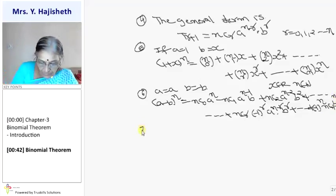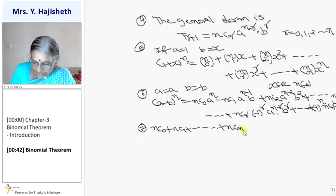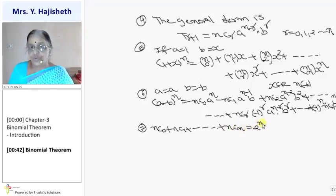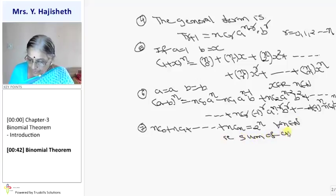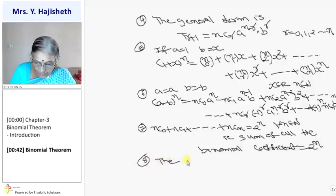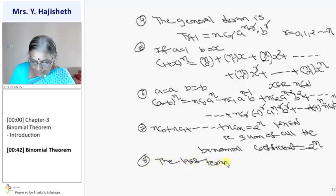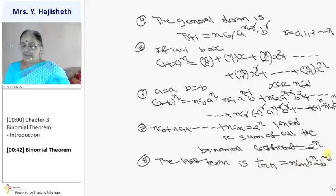Now, suppose you want to add all the binomial coefficients: NC0, NC1, NC2, up to NCN. The sum of all these binomial coefficients is 2 raised to N, for all N belonging to N. That is, the sum of all binomial coefficients is 2 raised to N. Also, the last term of the binomial expansion is T(N+1), which equals NCN B raised to N, and since NCN is always 1, the last term is always B raised to N, and the first term is always A raised to N.